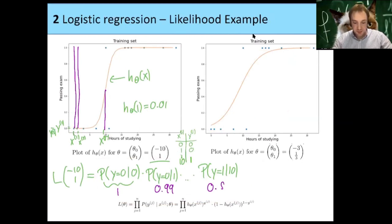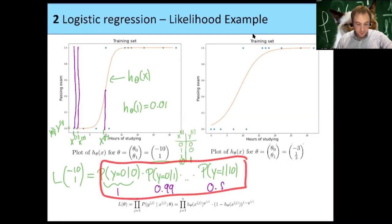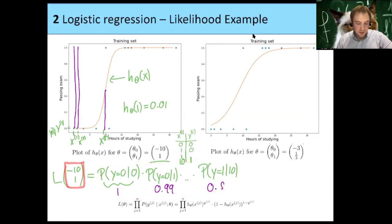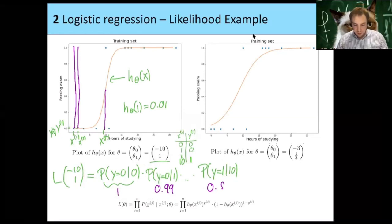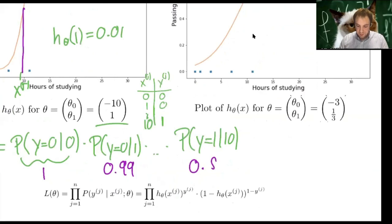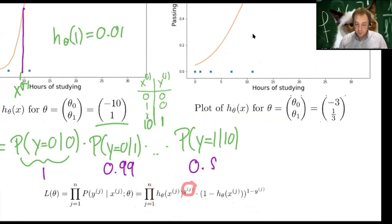The likelihood formula is given by this product of h_thetas when y is 1, and of (1 minus h_theta) when y is 0. The likelihood gives a number for each theta — it is the product of probabilities, maximum value 1 meaning perfect description, smaller values meaning less likely.